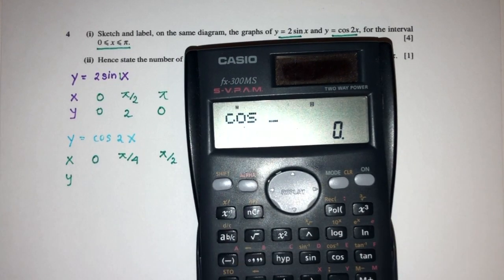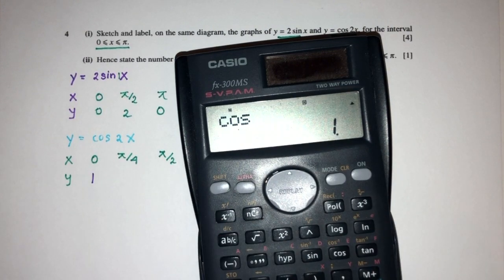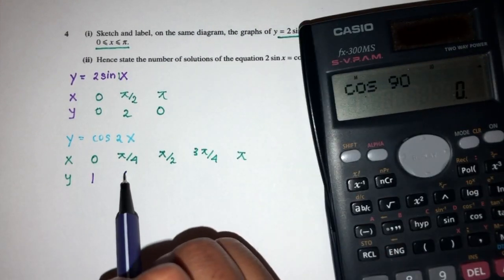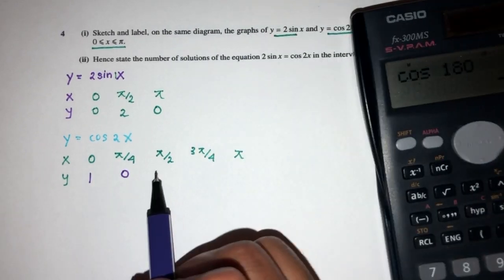Now finding the corresponding values of x, pretty easy. First one, cos(0), that should be 1. Here we have cos(2 times 45), cos(90), that should be 0. Here we have 90, so cos(180), that should be -1.